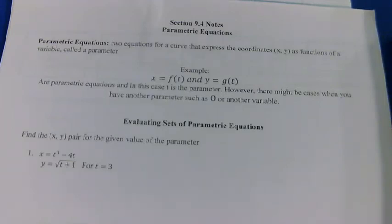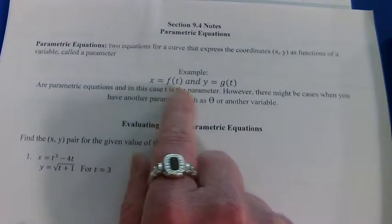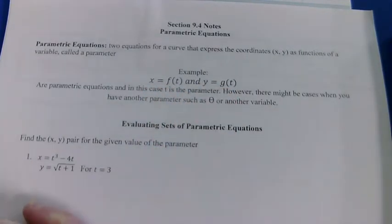Parametric equations are two equations where x and y are functions of another variable. The best way to describe this is you have something moving on a graph, maybe it's an ant, and it's moving with time. But it's not just moving horizontally, it's moving up and down too. So we have to consider its horizontal movement as a function of time and its vertical movement as a function of time.